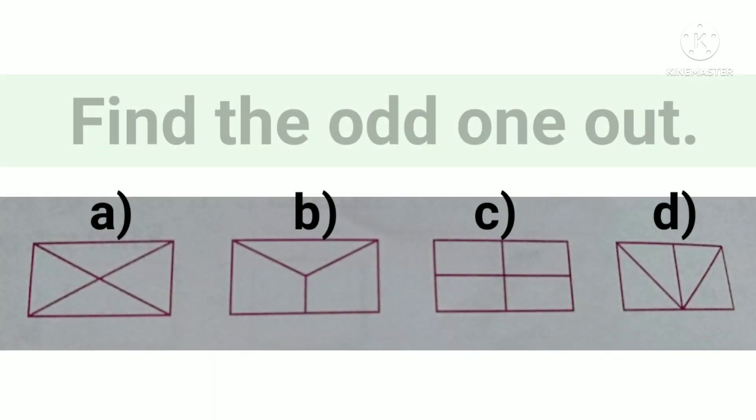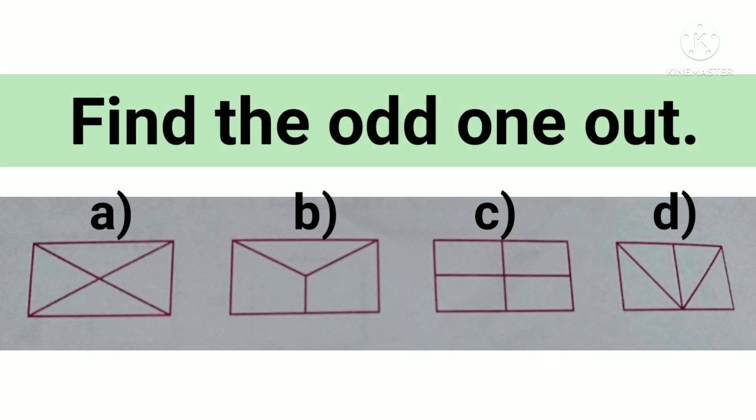Now the last one. Again, you have to find the odd one out. 4 pictures are given. Then you have to find out the odd one. That means the one which is different.